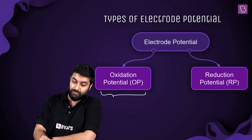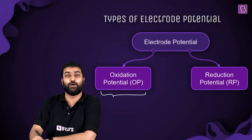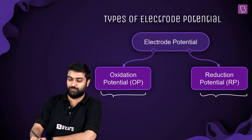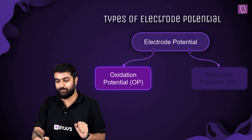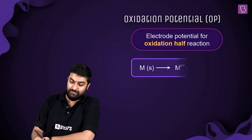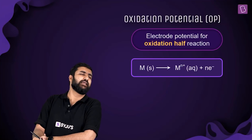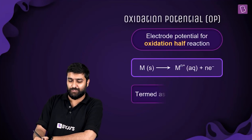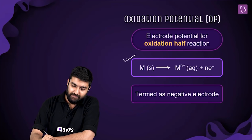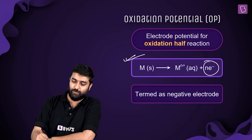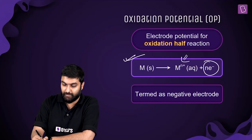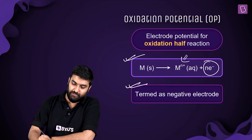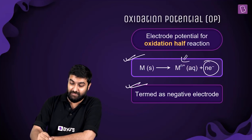The types here are oxidation potential and reduction potential. For oxidation potential, we have a generalized half-reaction where some metal M loses n electrons and forms M with charge n+ — this is termed the negative electrode.